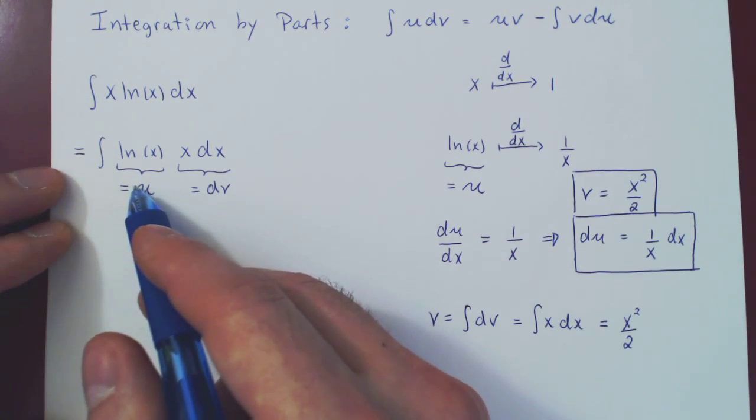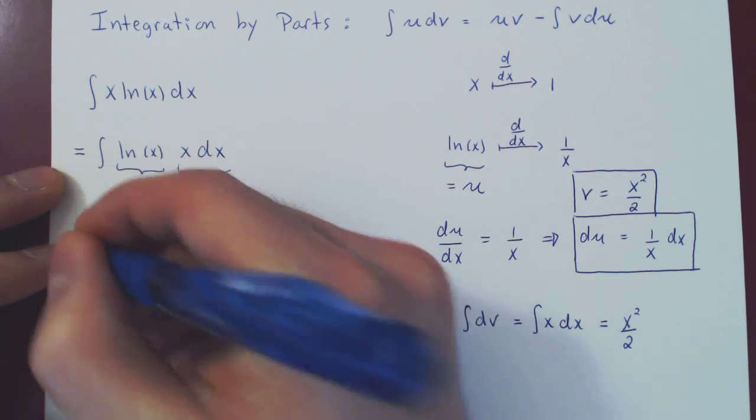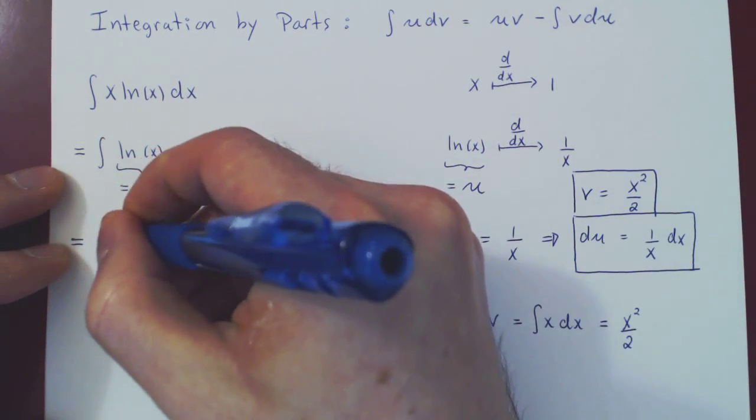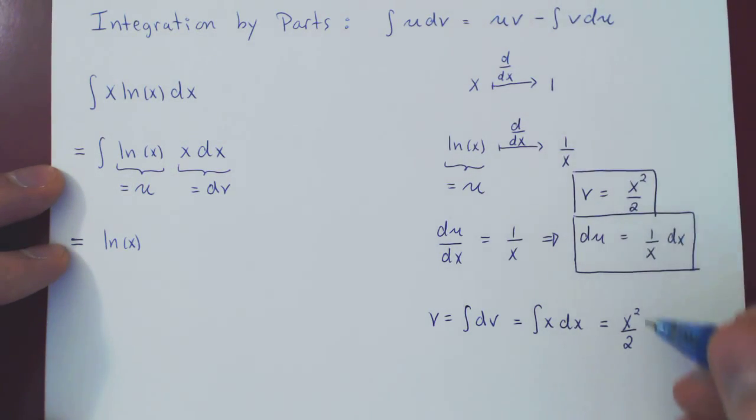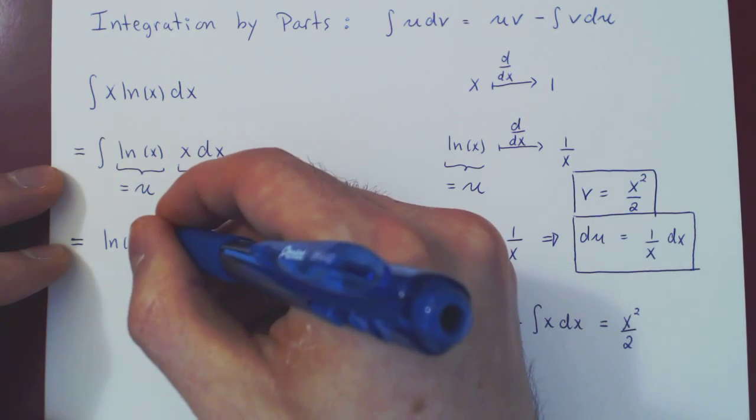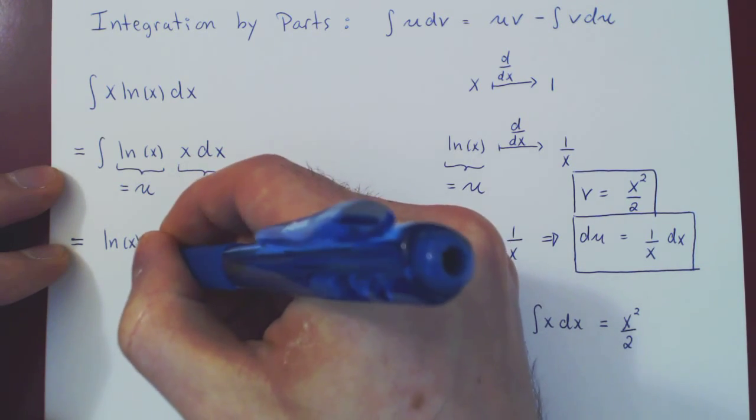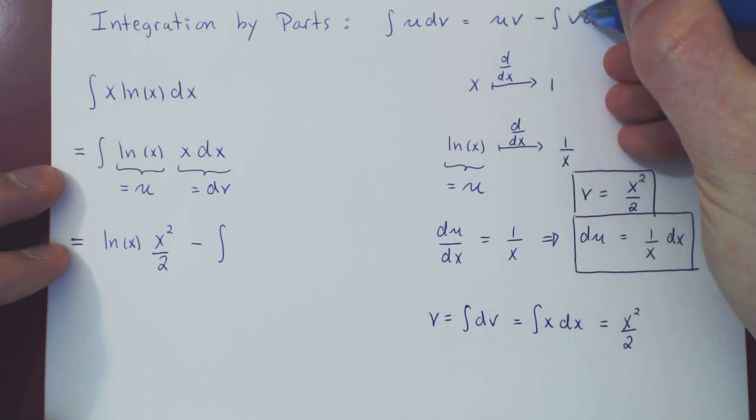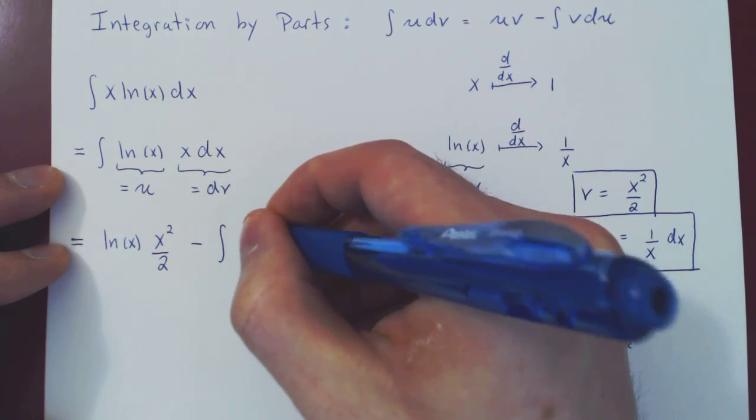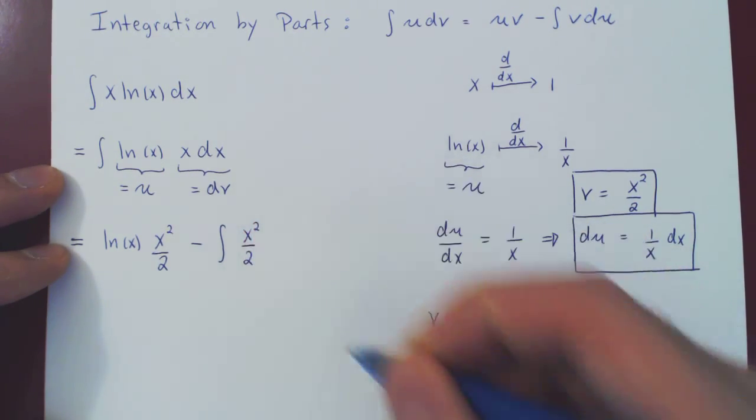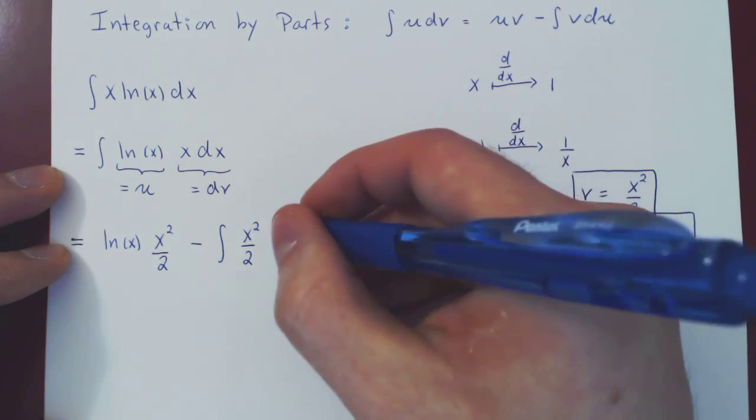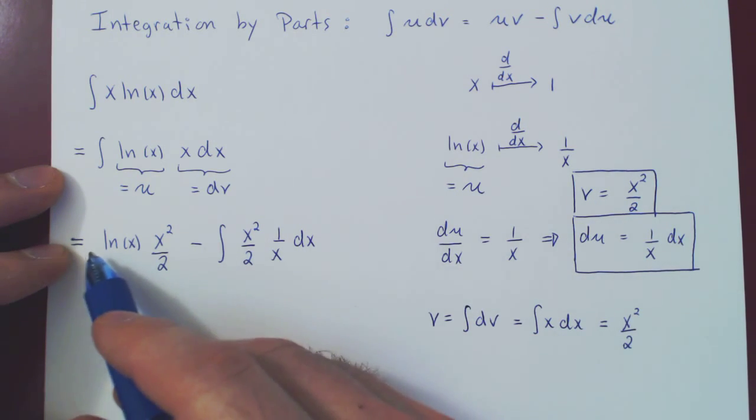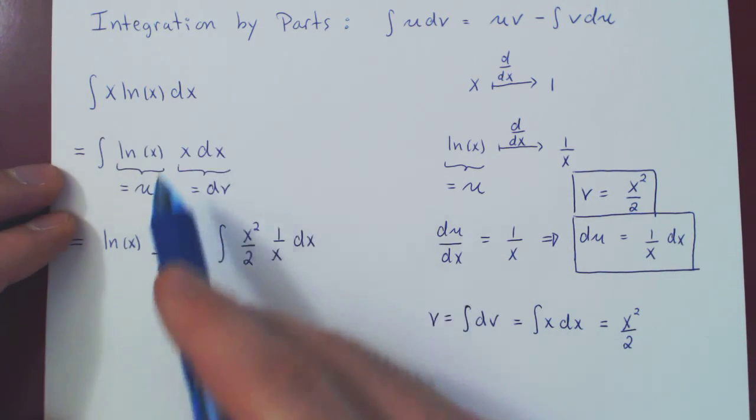So the integral of u dv equals u, that's ln of x, times v, that's x squared over 2, minus the integral of v, x squared over 2, du, 1 over x dx.